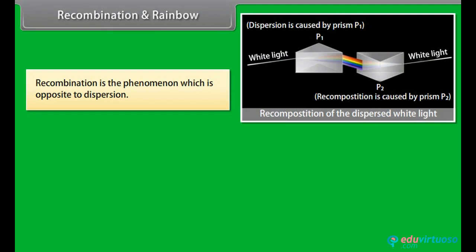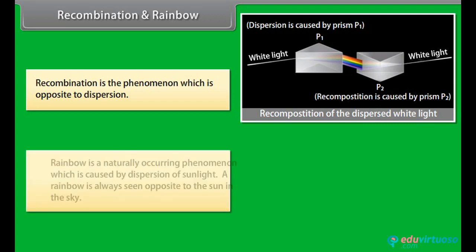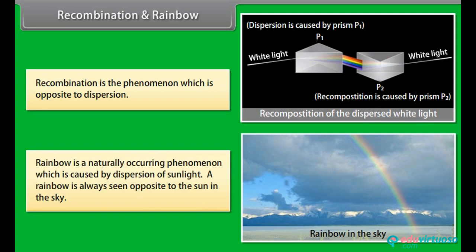Recombination and Rainbow: Isaac Newton observed that if two glass prisms are placed parallel to each other such that one is inverted with respect to the other, white light entering one prism gets split into seven colors which, when falling on the other prism, recombine to give white light again. This is termed recombination. A rainbow is a natural phenomenon which occurs as a result of dispersion and is always seen opposite to the sun in the sky. During rain, water drops act as prisms for sunlight — they refract, disperse, and internally reflect the sunlight to produce the rainbow.